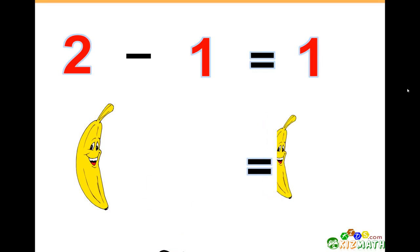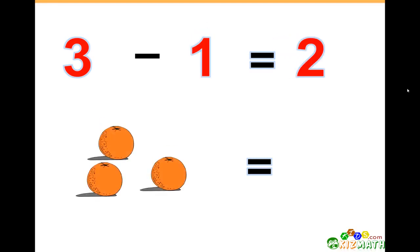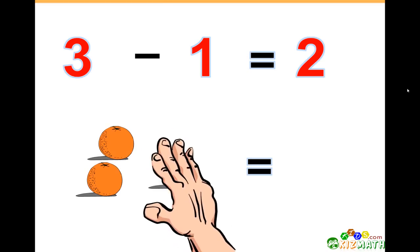3 minus 1 equals 2. If we have three oranges and we take away one orange, we only have two oranges left.